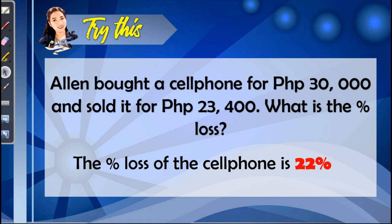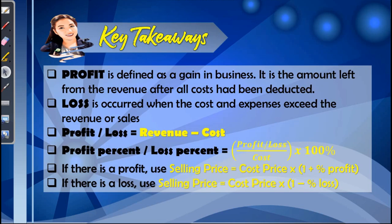Were you able to get all of the answers correctly? If yes, great job. Here are the key takeaways: profit is the gain in business — the amount left from revenue after all costs are deducted. Loss occurs when costs and expenses exceed revenue. To find profit or loss, subtract revenue and cost. For percent profit or loss, use profit or loss divided by cost times 100%. For selling price with profit: cost price × (1 + percent profit); with loss: cost price × (1 − percent loss).